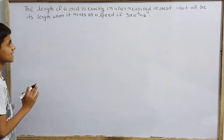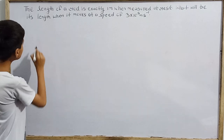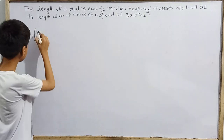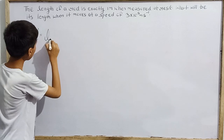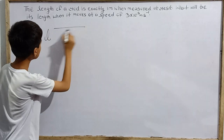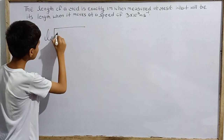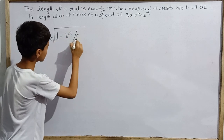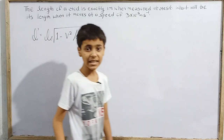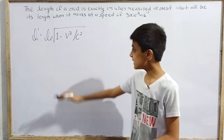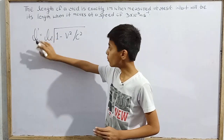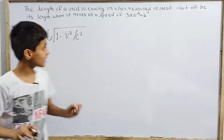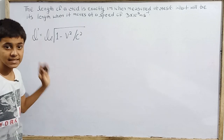The length contraction formula is: L' = L × √(1 - v²/c²). This means the length of a rod in motion at speed v equals the rest length multiplied by that square root factor.